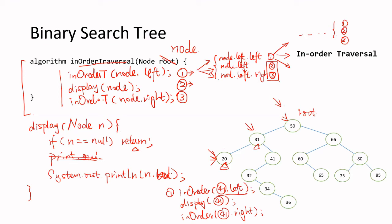Hypothetically, would our algorithm work if the node 36 at the bottom were replaced with 49? No — you could put 49 there as a binary tree, but it would no longer be a binary search tree. All nodes in the left subtree must be smaller than their root. For node 41, having 49 in its left subtree violates the basic BST property. If you put 40 there instead, that would be valid.